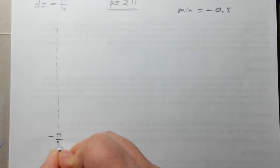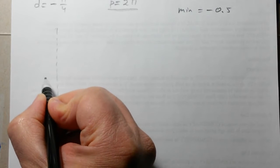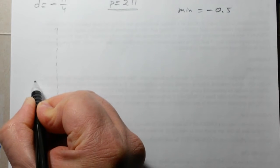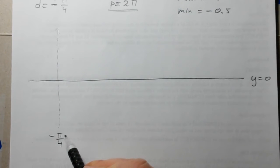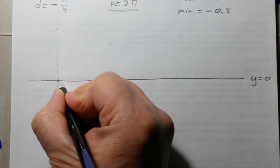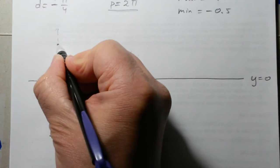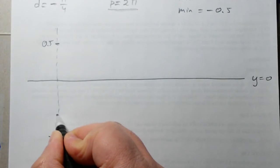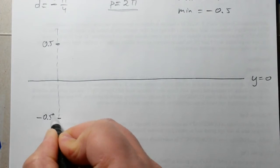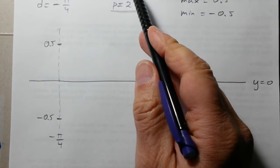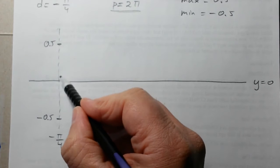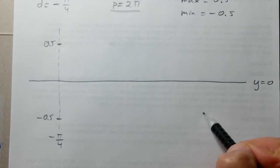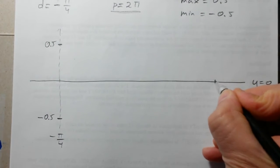That's our starting point at negative pi over four. We draw the equation of axes, which in this case is y equals zero — we can do a solid line there. The maximum value is 0.5 and the minimum value is negative 0.5. It takes two pi to complete one cycle. We start at the equation of axes and then go up.